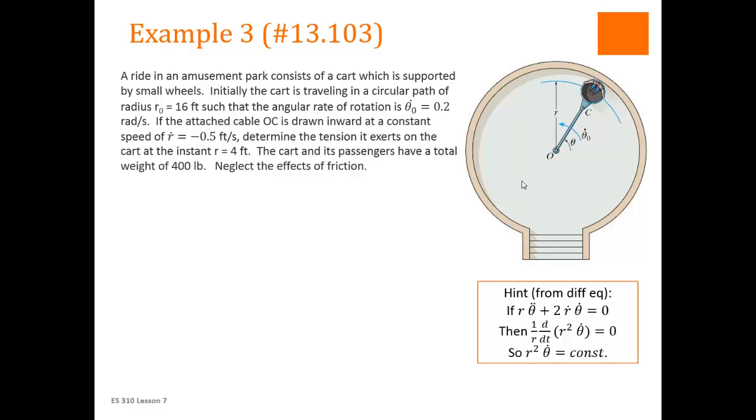And we need to figure out what the tension in that rope is at the point where r has now changed to 4 feet. So it starts at 16 feet. When it gets to 4 feet, what's the tension in the rope? And we're told that the cart and the passengers have a total weight of 400 pounds.